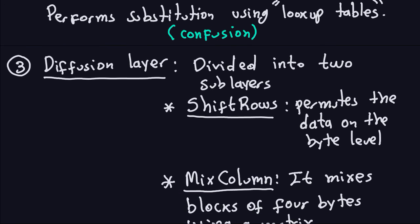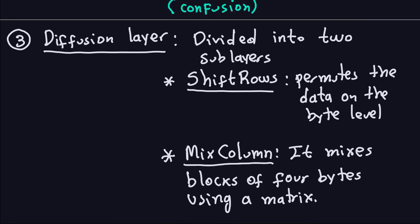The diffusion layer is the third layer, and it is divided into two sub-layers: the ShiftRows operation, which performs a permutation of data at the byte level, and the MixColumns operation, which uses a matrix. Both of these perform permutations at the byte level rather than the bit level. That's another big difference from DES — AES works on bytes rather than bits.